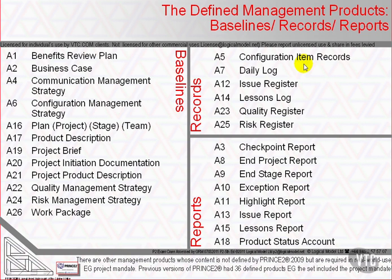The configuration item records record the status as projects travel through their life cycle of work, from not started, work in progress, ready for test and then maybe ready for rework, otherwise ready for integration, and finally ready for delivery and delivered. A product status account, on the other hand, is a snapshot in time of the current status of a collection of configuration item records — for example, all the products allocated to a particular team or stage.